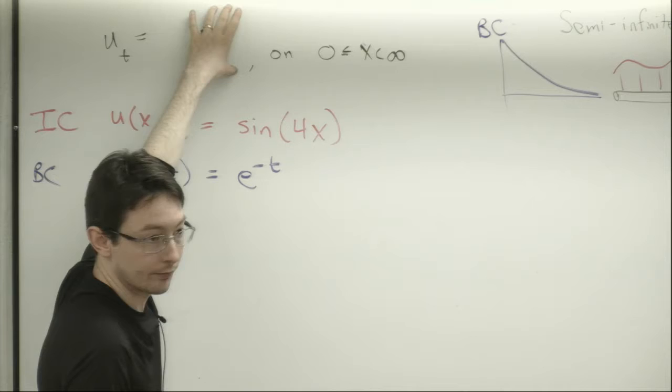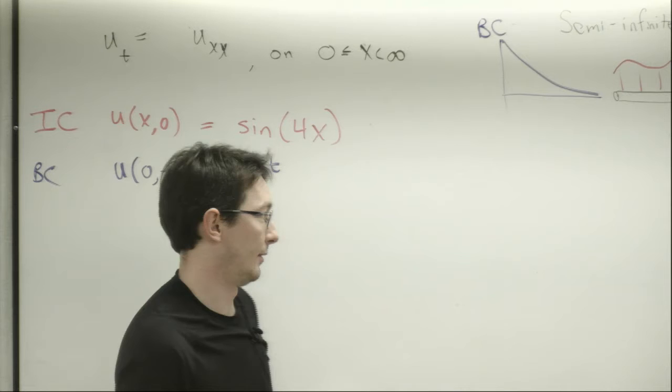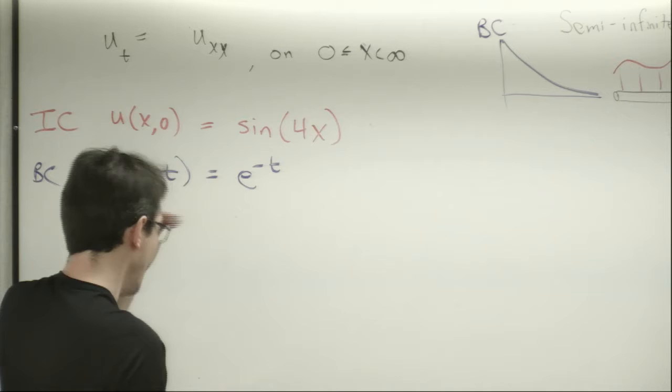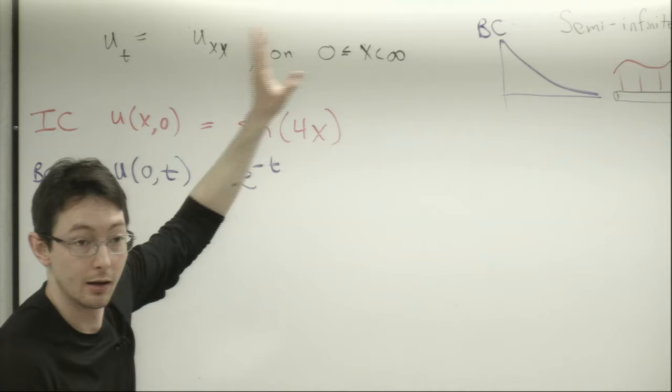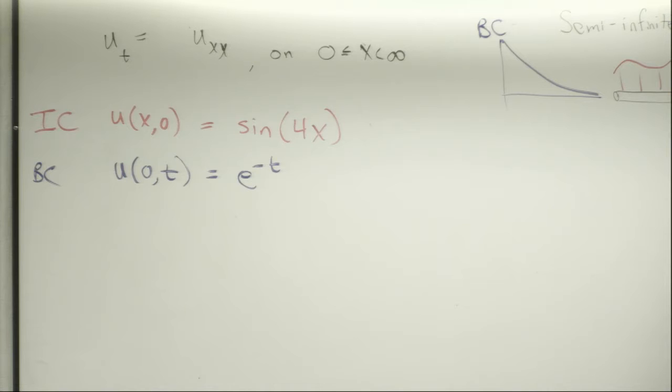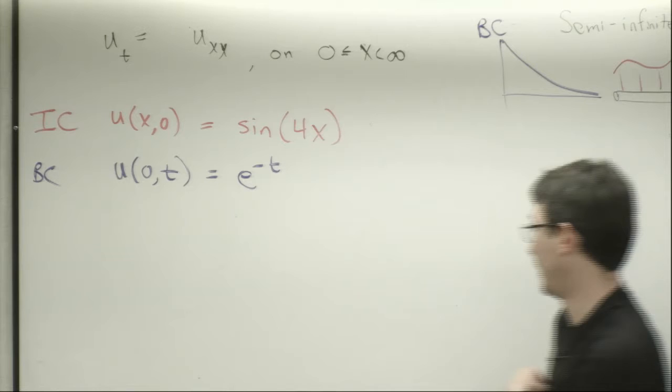When we Laplace transform this equation, the initial condition and the boundary condition are essentially going to play the roles of forcing in the analog of ordinary differential equations. We want to solve for u, the temperature distribution, and we're going to Laplace transform our equation. What variable should we Laplace transform in? We get to choose — we can Laplace transform with respect to time or space.